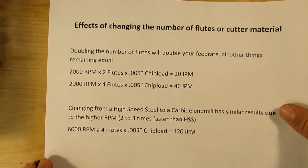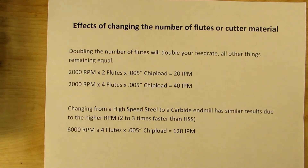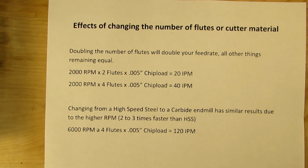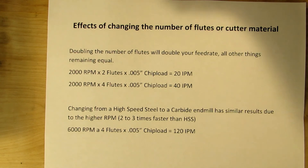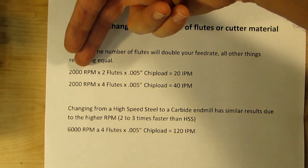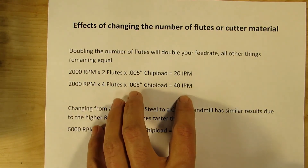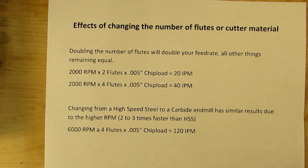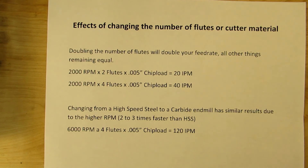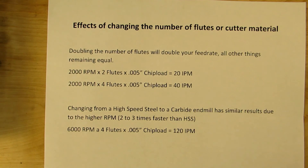A big time saver in machining is changing the number of flutes or the cutter material. Going from a two-flute to a four-flute cutter doubles your feed rate — 2,000 RPM with a two-flute and five-thousandths chip load gives 20 inches per minute, while a four-flute gives 40 inches per minute. For slots or pockets use a two-flute for chip clearance, but for profiling on the outside use a four-flute — you'll finish a lot faster, and in a machine shop, time is money.